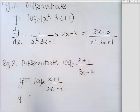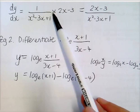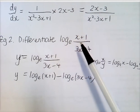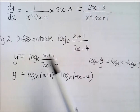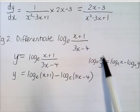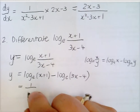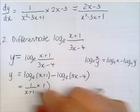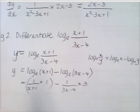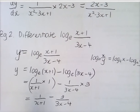Now the next one: differentiating log to the base e of a fraction. We don't use quotient rule for logs — we need to use the log laws. Log to the base a of x over y is log to the base a of x minus log to the base a of y. So we separate them and apply 1 over f(x) times f'(x) to each part: 1 over x plus 1 minus 3 over 3x minus 4.